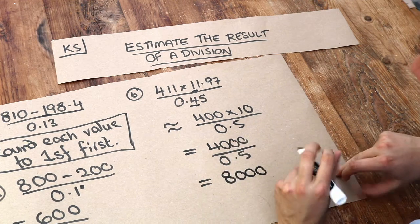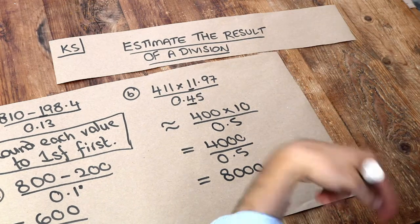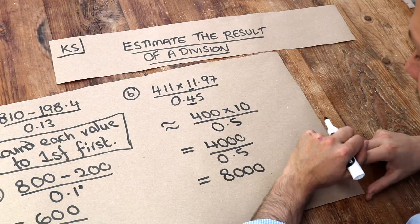And again, remember that when you divide by half, that's the same as multiplying by 2. If you were to divide by a third, that's the same as multiplying by 3. If you were to divide by a quarter, that's the same as multiplying by 4.